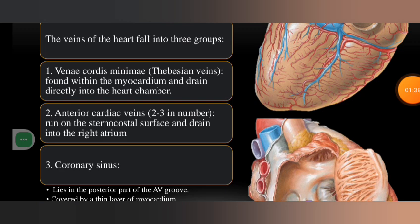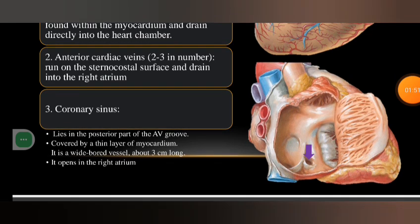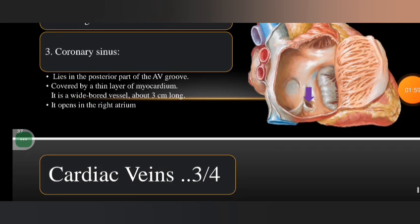The vena cordis minimi, also called the Thebesian veins, are found within the myocardium and drain directly into the heart chambers. The anterior cardiac veins, two to three in number, run on the sternocostal surface and drain into the right atrium. The coronary sinus lies in the posterior part of the AV groove, covered by a thin layer of myocardium.